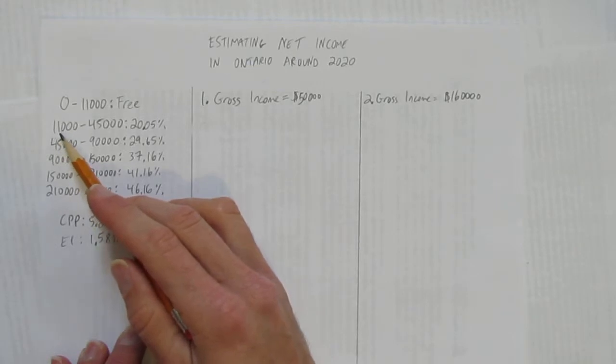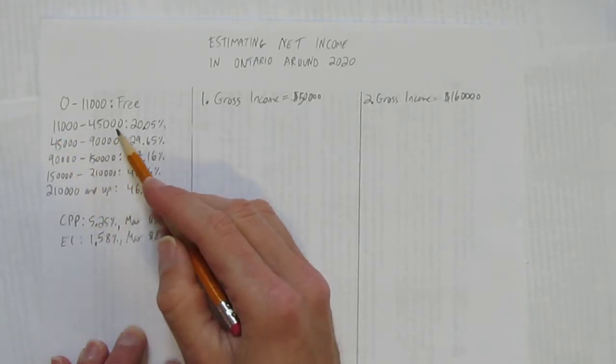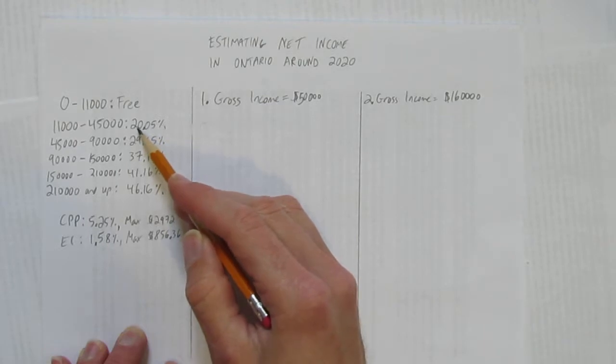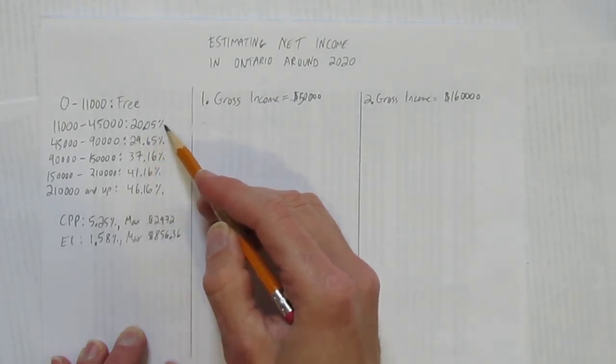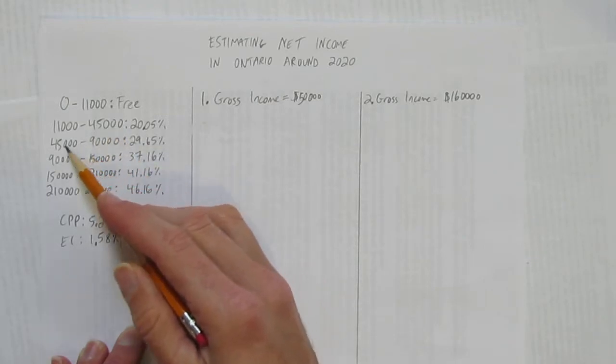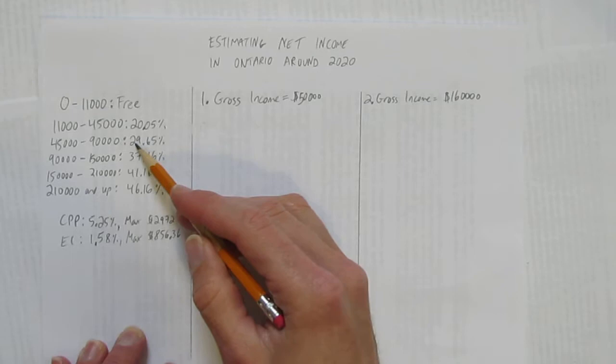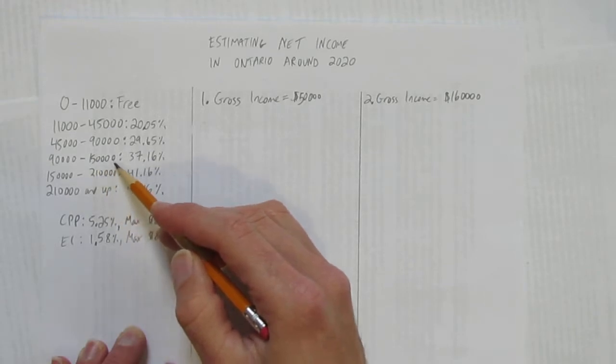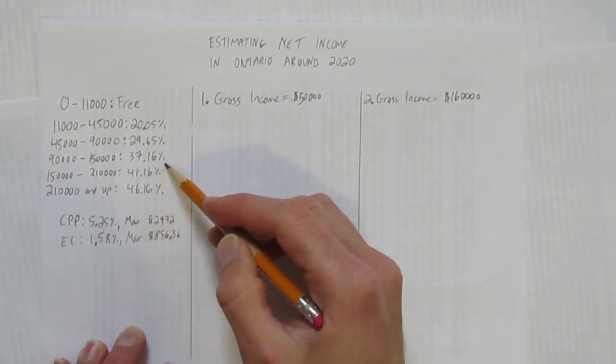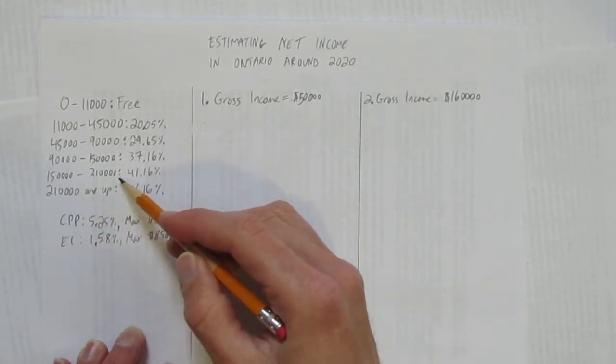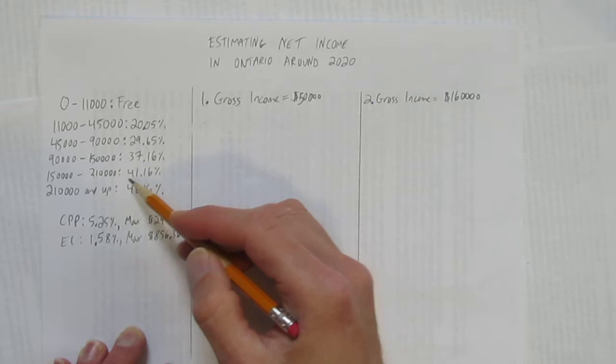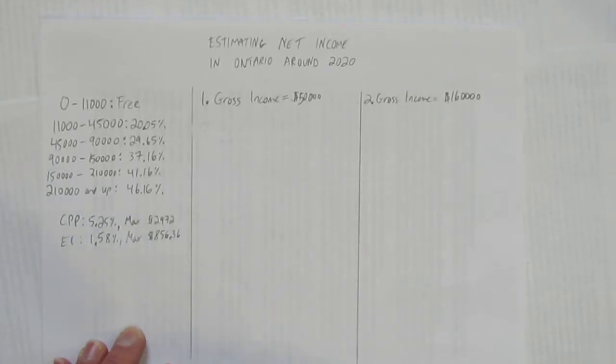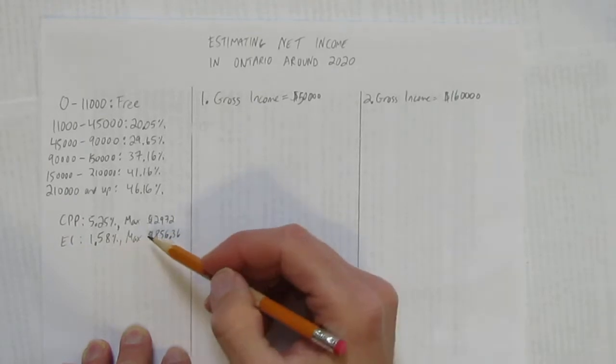Then every amount of money from $11,000 to $45,000, any money you make inside here gets taxed at 20.05%. And then if you're making more than $45,000, all your dollars from $45,000 to $90,000 get taxed at 29.65%. And all your money from $90,000 to $150,000 gets taxed at 37.16%. From $150,000 to $210,000 at 41.16%. And finally, any amount of money you make from $210,000 and up gets taxed at 46.16%.